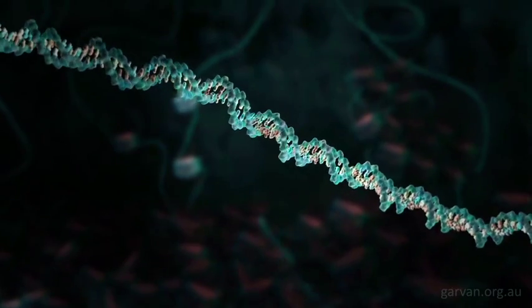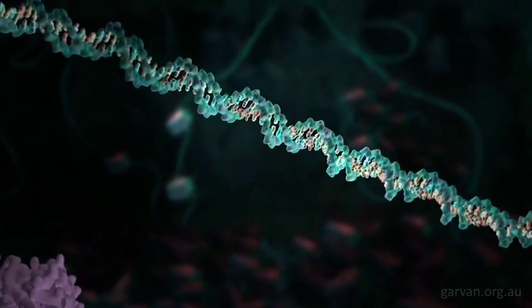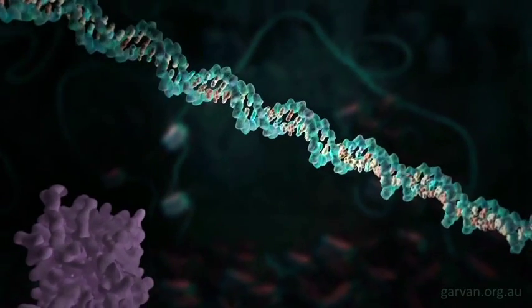One of the ways genes can be switched off is by adding tiny chemical tags called methyl groups, shown here as bright particles.